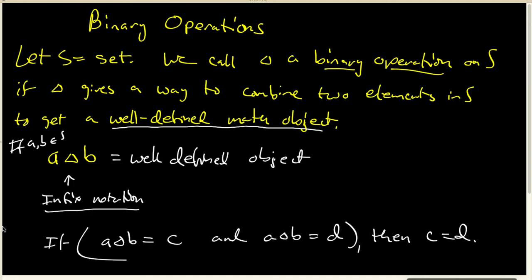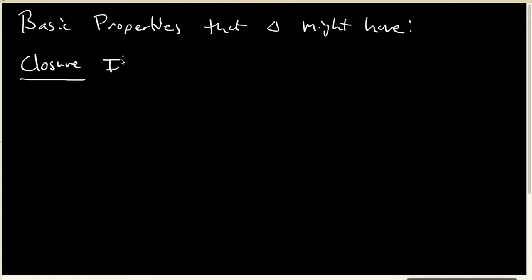There are a couple of other things I want to think about in terms of some very basic properties that binary operations might have. The first one is something called closure. If we know that when A and B are inside S, then A triangle B is always inside S, we say that triangle is closed on the set S.